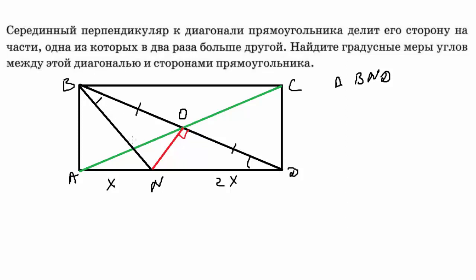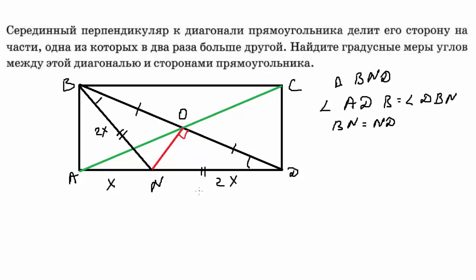В равнобедренном треугольнике BND углы при основании равны: угол ADB равен углу DBN. Раз углы равны, BN = ND, то есть BN = 2x.